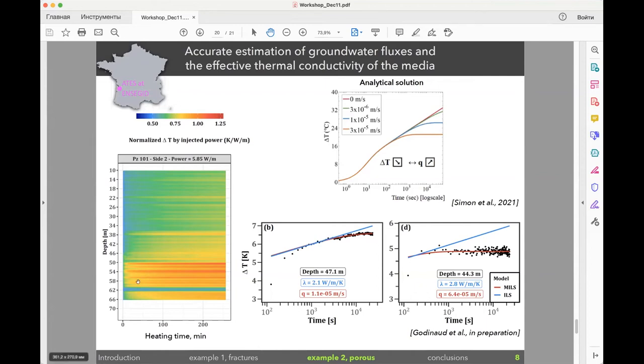What we can see is that the temperature goes up and sometimes it stabilizes at some depths and at some depths it's not so hot. Then we can interpret the temperature transients with analytical solutions, and for every depth we can obtain thermal conductivity and also flux. It works pretty well in some environments like porous media and unconsolidated aquifers.